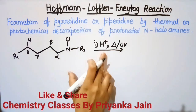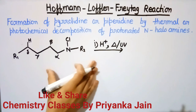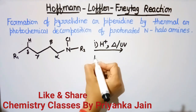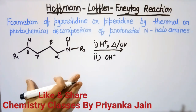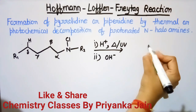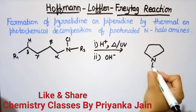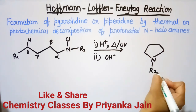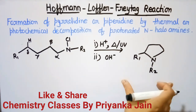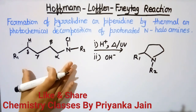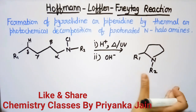In the first step, we protonate this compound and then heat the reaction mixture or expose it to UV radiation. In the next step, it is treated with a base. In the presence of the base, the compound is converted to pyrrolidine or its derivative.